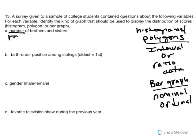We identify number of brothers and sisters as a ratio scale of measurement. As a result, we can use a histogram or polygon, since they are identical in terms of the data used — varying only in visual presentation. One is a bar graph and one is a line graph. Let's take this one step further and assess if this is a continuous or discrete variable.